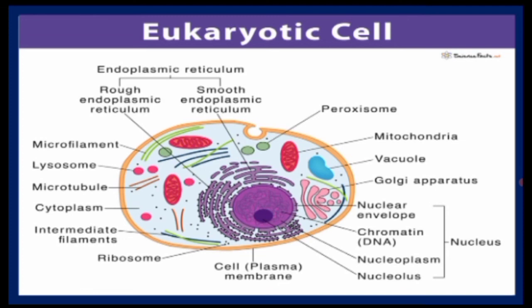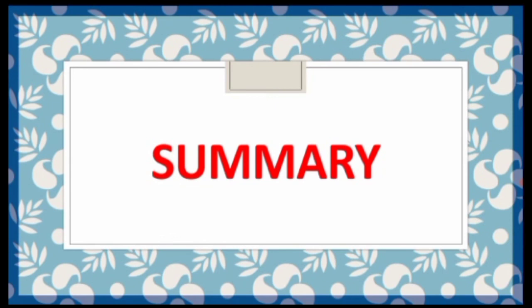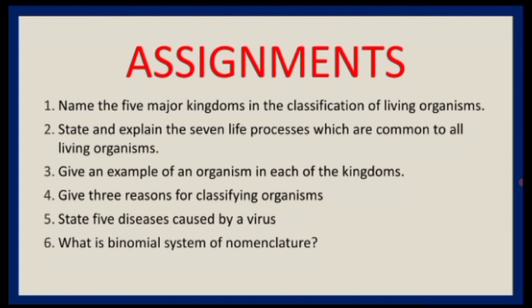This brings us to the end of today's lesson. To summarize: we looked at the seven life processes using the acronym REMIND-R, classification using the Carolus Linnaeus system giving organisms two-part Latin names, and the three types of cells — acaryotic cells (viruses), prokaryotic cells (bacteria), and eukaryotic cells. Thank you very much and see you in the next lesson. Please complete your assignments and forward them to us.